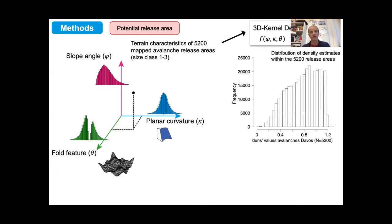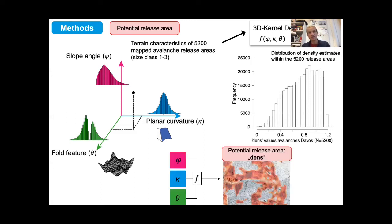The graph on the right shows the distribution of the calculated density within the 5,200 release areas. With this density function, we can now calculate for any terrain pixel containing those three features a specific density value, and you can see the result on the map on the right.